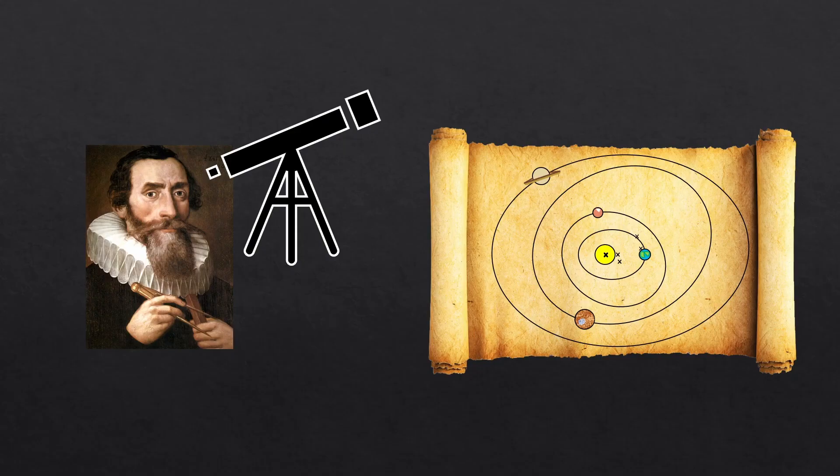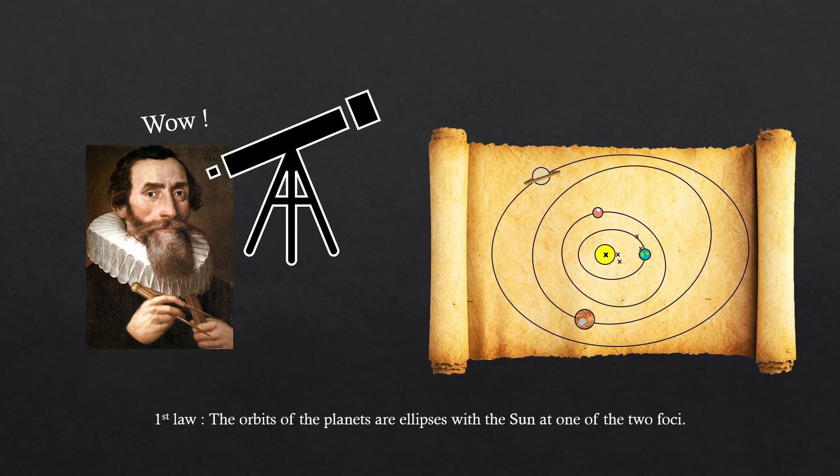This was crazy. At that time, it was considered arrogant for humans to try to understand and predict God's moves. What Kepler did was very against God, just like Galileo. He didn't need God to understand the solar system. He simply used math to understand it. This was his first law. The orbits of the planets are ellipses with the sun at one of the two foci.